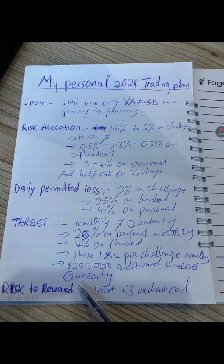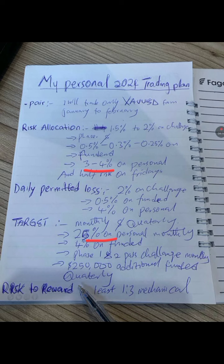The next thing is daily permitted loss — I also have it written. During challenge stages, phase one or phase two, I'm allowed to lose up to two percent. On a funded account, I'm allowed to lose only 0.5 percent on a single day. On a personal account with my own money, I'm allowed to lose up to four percent. I have monthly and quarterly targets, but no weekly or daily targets on a personal account.